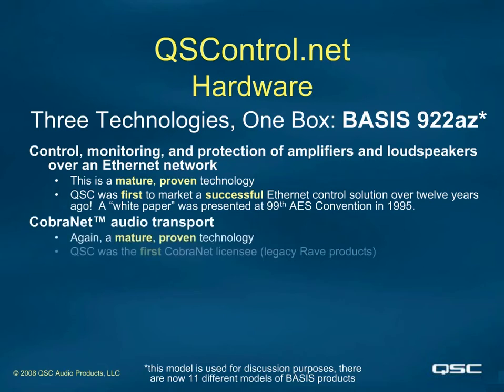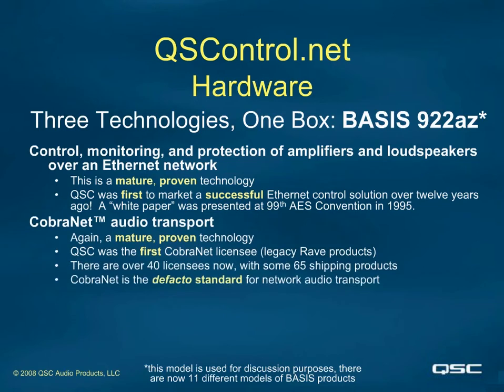The second technology is the use of CobraNet for audio transport. Again, this is not a new technology, but is instead a proven, reliable, and mature solution for sending multiple audio channels throughout a network. It is also based on Ethernet. While QuesC did not invent CobraNet, we were the first CobraNet licensee in the industry with our legacy Rave products. Now there are over 40 licensees with about 65 shipping CobraNet products. All of these products can coexist on a network and share audio signals among them. CobraNet is now the de facto standard for network audio transport.